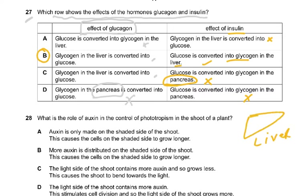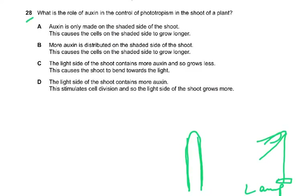You must be very clear: glycogen is stored in the liver or the muscle, not in the pancreas.